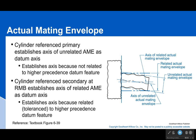When you have a feature of size selected as a datum, as long as it's not the primary datum, you use what's called the actual mating envelope. This cylinder is supposed to be perpendicular to a line, so we find the smallest cylinder that can fit everything inside it while keeping it perpendicular to that line. That's the actual mating envelope — the smallest hole you could slide over that cylinder while keeping it perpendicular to the back plane.